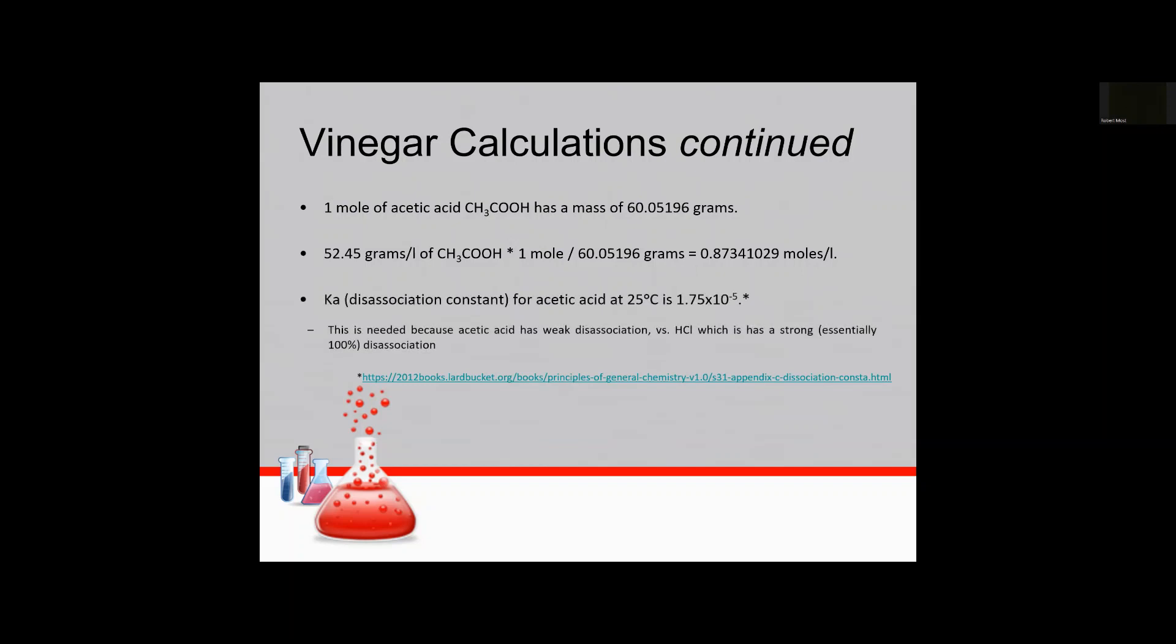So the dissociation constant for acetic acid at 25C is 1.75 times 10 to the minus 5. That was just looked up. And we need this again as I mentioned before because acetic acid has a weak dissociation. And so because of that we have to dive into a quadratic equation so hopefully that doesn't scare too many people. We're going to just use this to find what the hydrogen ion concentration is for this weak dissociation. So pushing ahead here.